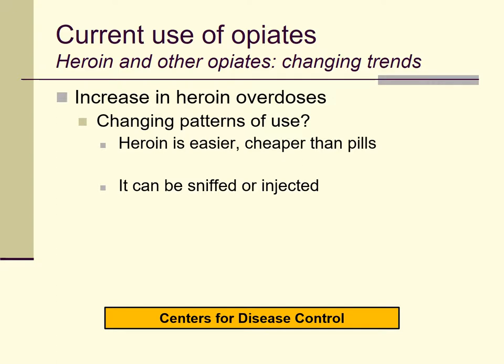The take-home message here is that heroin — the most famous opiate — is relatively rare and rates of use have been relatively stable over time. However, for other opiates, especially prescription medications, rates are higher and have changed a lot over time.